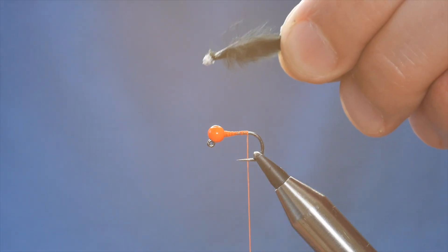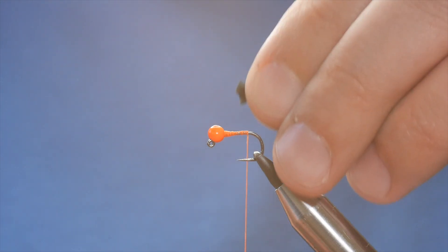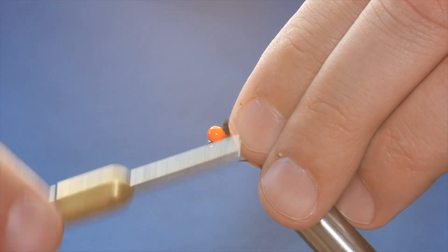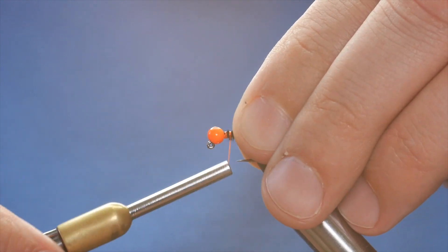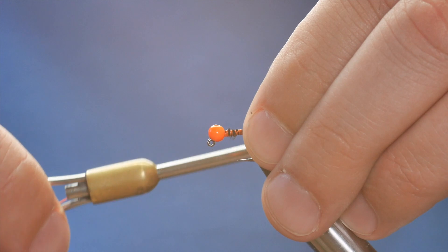I'm going to remove this waste bit here and catch that in all the way up. Now you noticed I'm taking my marabou tail all the way back up to the bead. That's just to give me a nice even body.